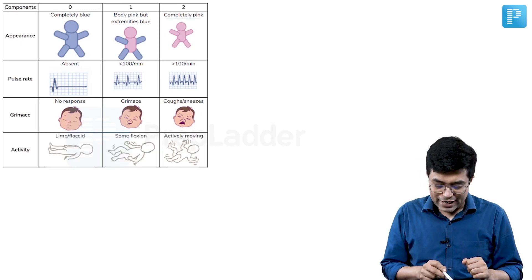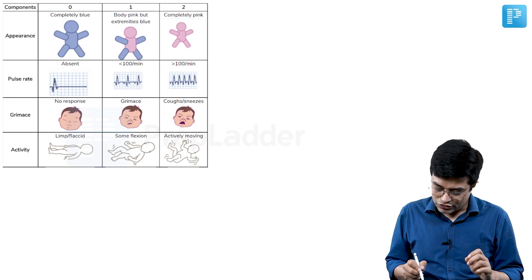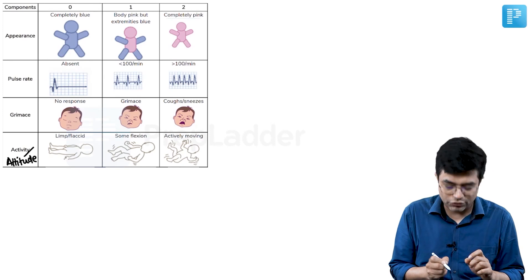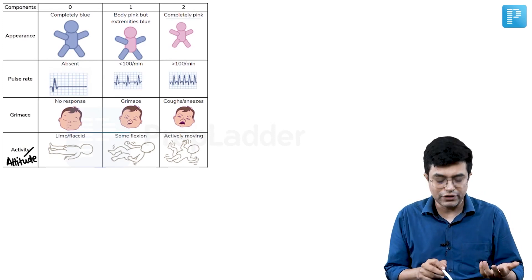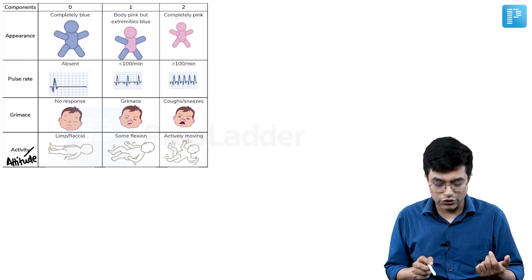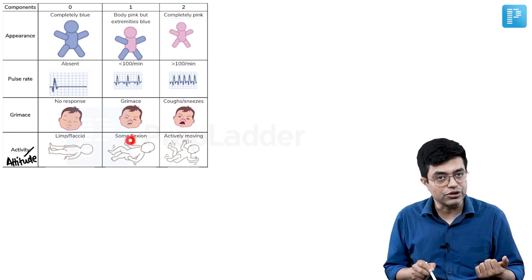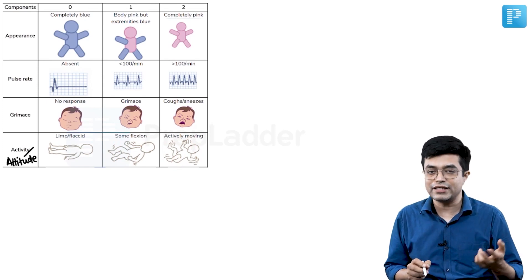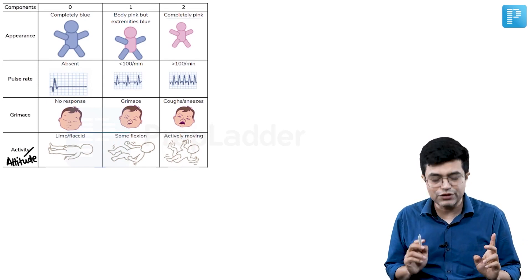Then activity. Activity is also sometimes in certain textbooks written as attitude. So activity or attitude are the fourth component. More commonly we use the word activity. If the child is limp, flaccid, no activity is happening, score of 0. If the child is showing some flexion, score of 1. If there is active flexion and extension, that is actively moving all four limbs, you give a score of 2.